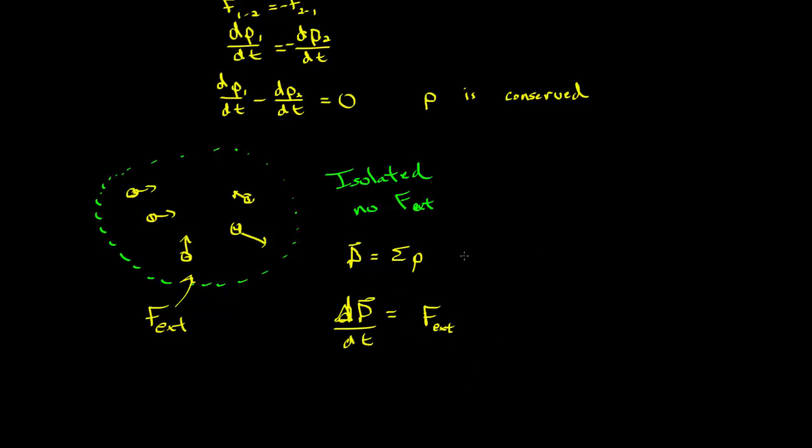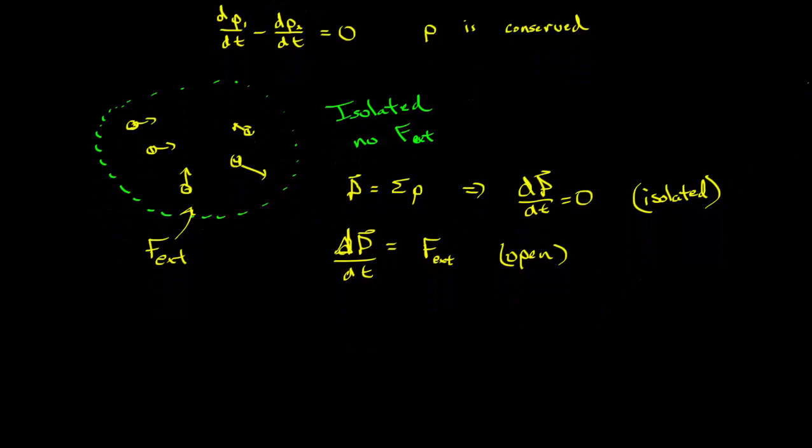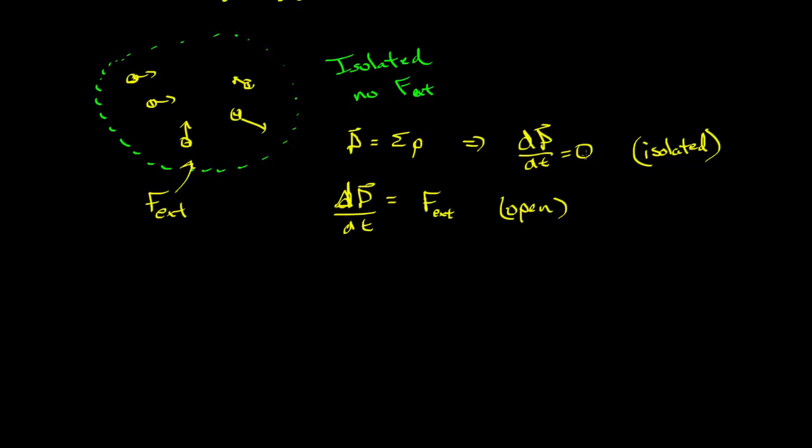Now, the idea, though, so this would be d big P over time equals zero. This is isolated. This is an open system. It means that there's external forces. Now, the key is that it depends on the system. So whether or not it's isolated or open. So if you want to have momentum always conserved, you make it into an isolated system.